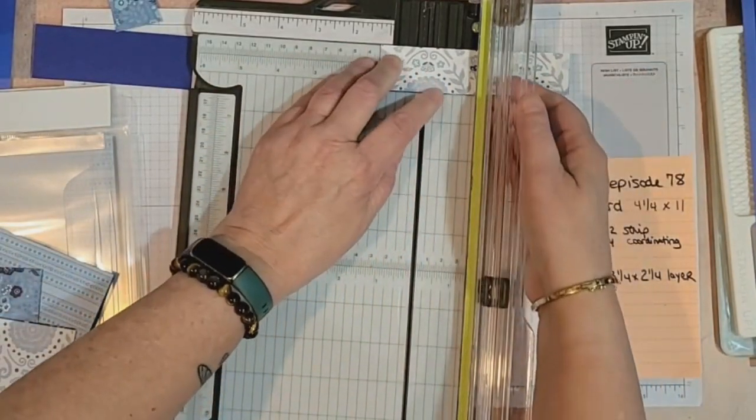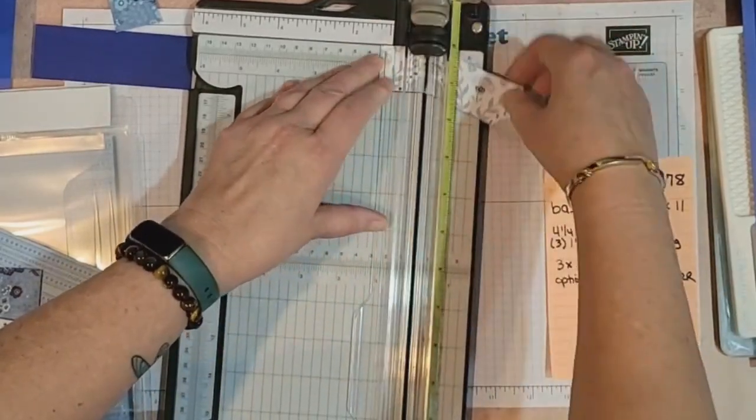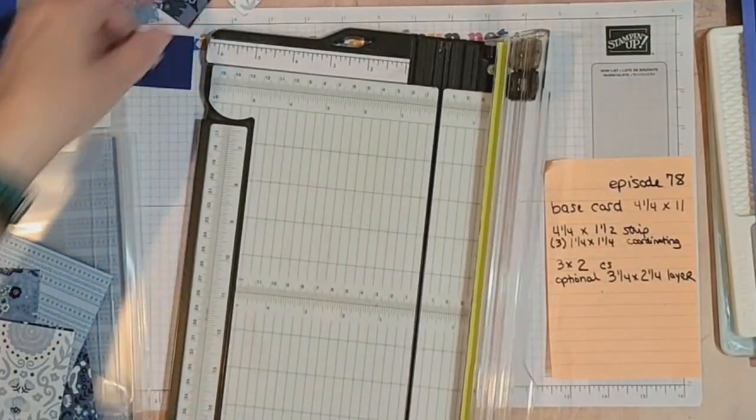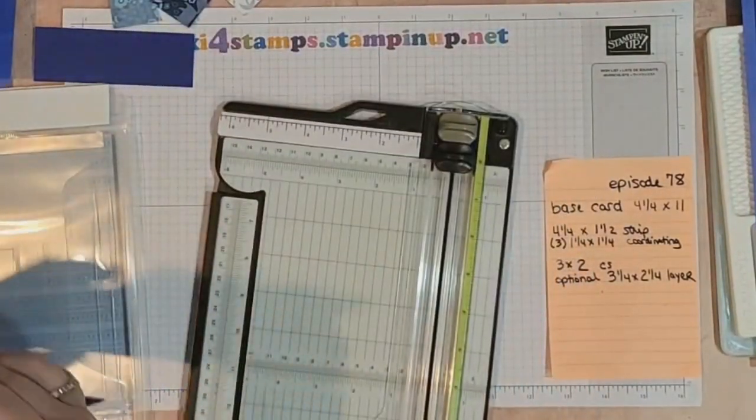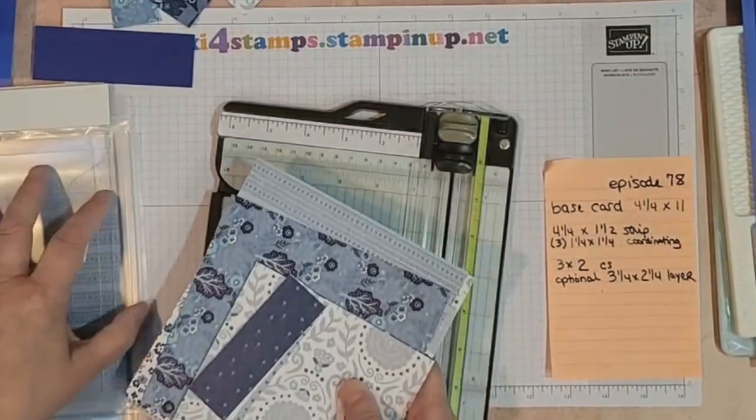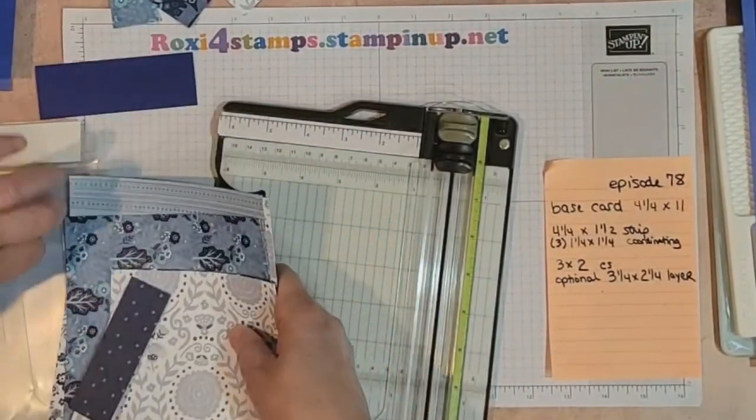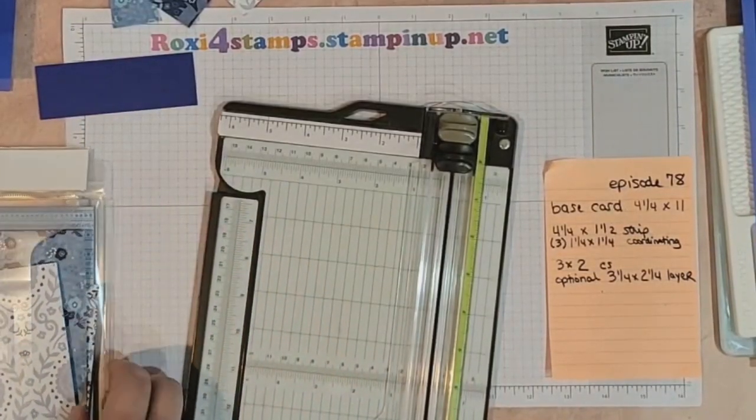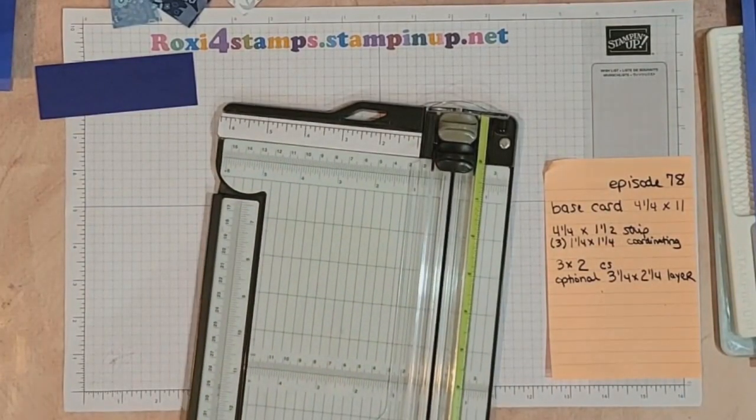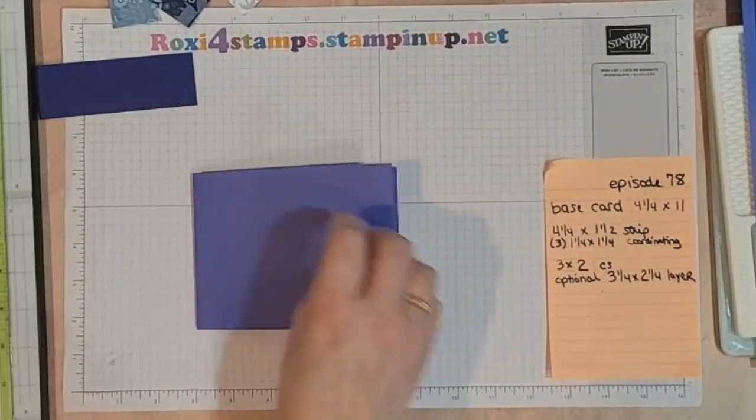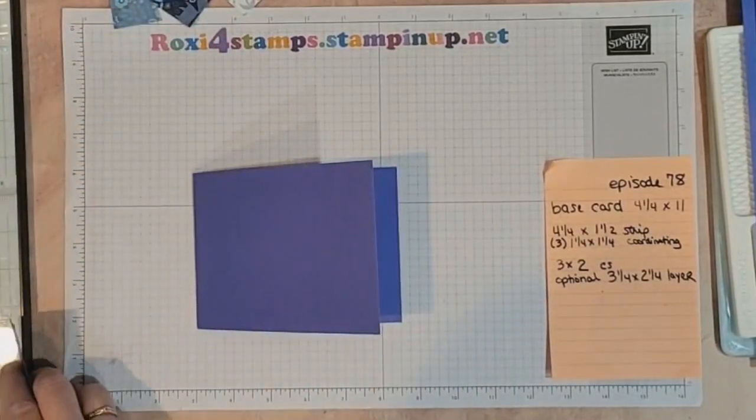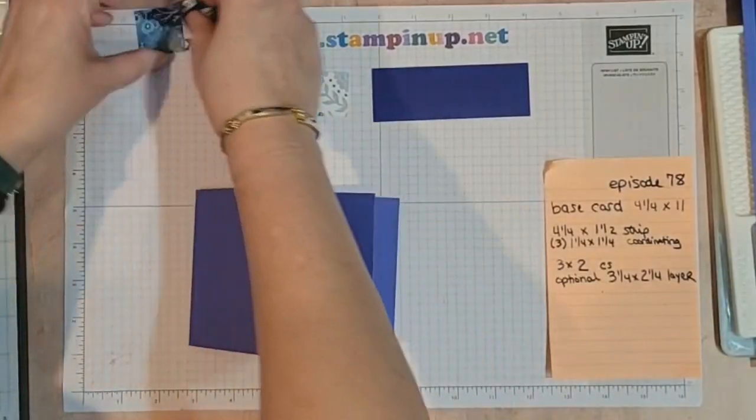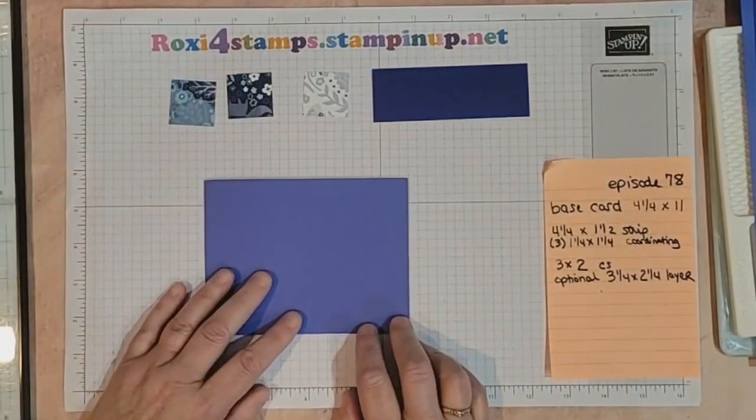Now although the DSP is retiring, if I remember right the dies that go with this suite are sticking around. If I remember right. I've only looked at the online catalog once. I usually peruse that and then I will go ahead and actually look more into it once I get my hard copy. Because looking on the computer is a lot different than looking at a hard copy.